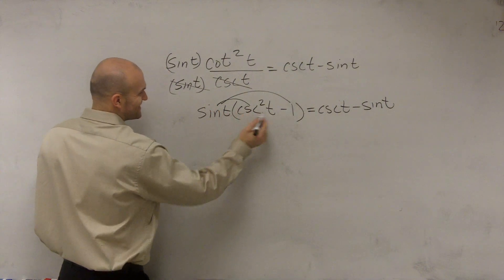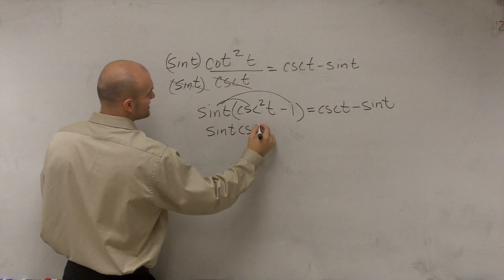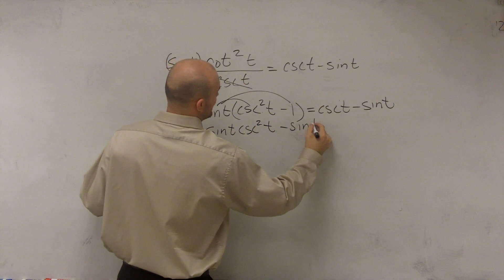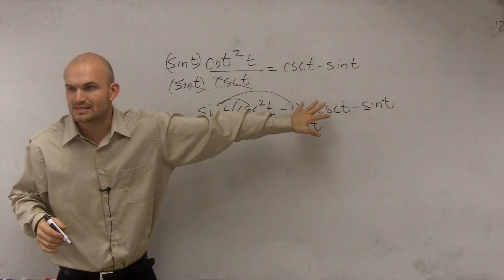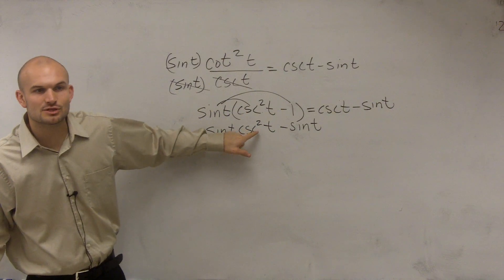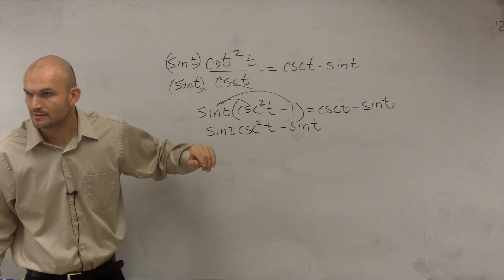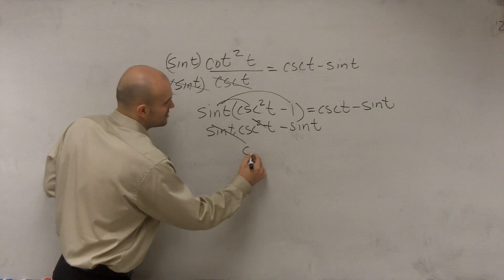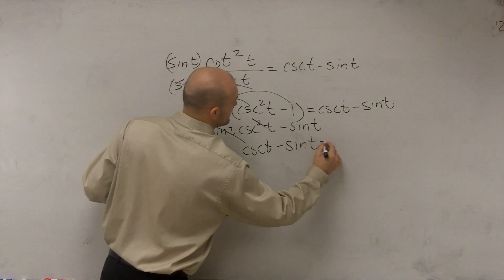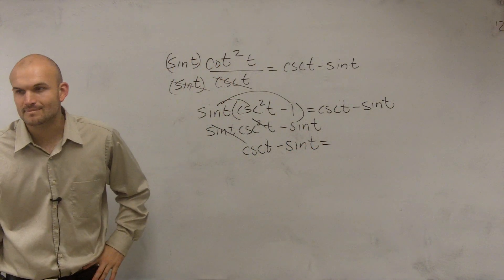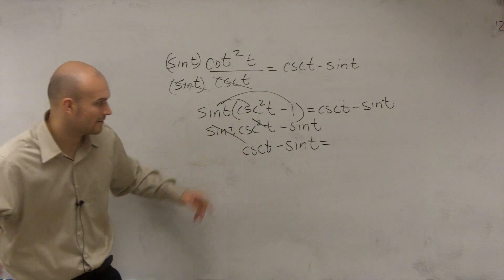So therefore, now you have sine of t times cosecant squared of t minus sine of t. Now I'm just going to continue working on the left side. We know that the right's already equal. Therefore, sine of t times cosecant of t. And remember, cosecant is 1 over sine. So therefore, I'm just going to be left with cosecant of t minus sine of t. Which, does that equal what's on the right side? Yes. Does everybody see how I got from there to there? Want me to go over that?